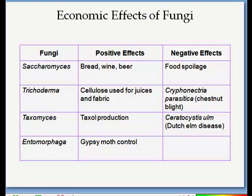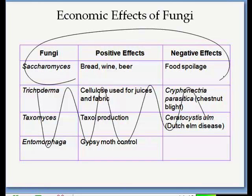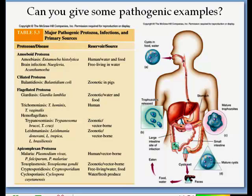Regarding economic effects of fungi, the most important one to remember is Saccharomyces, which has a positive effect in making bread, wine, and beer, and a negative effect in food spoilage. There is also a chart showing some pathogens and their reservoirs in the human body — for example, ciliated protozoans can be present in zoonotic pigs, and malaria is transported through a protozoan with humans as a vector-borne source.